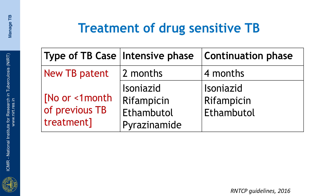I would like to start her with the 6-month daily regimen. The 2 months will be the intensive phase and 4 months will be the continuation phase. During the intensive phase, she will receive isoniazid, rifampicin, pyrazinamide, and ethambutol. And during the continuation phase, she will receive isoniazid, rifampicin, and ethambutol.